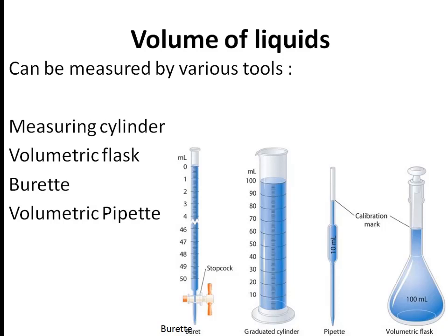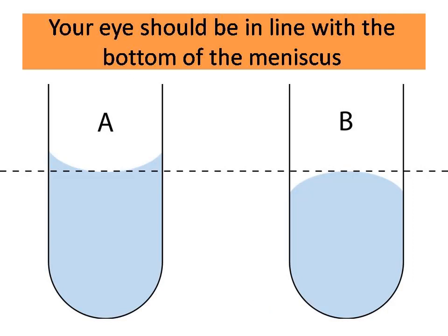These volume-measuring tools have differences in their accuracy. The most accurate one is the volumetric pipette, and then the burette is considered another accurate apparatus for measuring the volume of liquid — it can measure different values. The volumetric flask is accurate and good for dissolving solid in liquid, but the least accurate is the measuring cylinder. When using a burette or pipette, your eyes should be vertical to the reading and in line with the bottom of the meniscus.